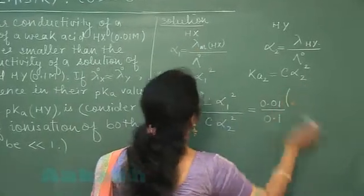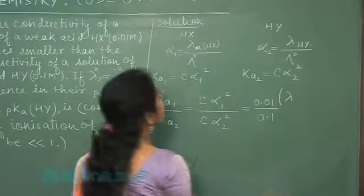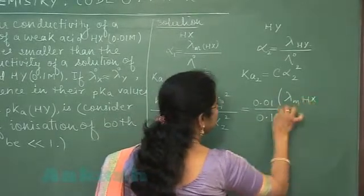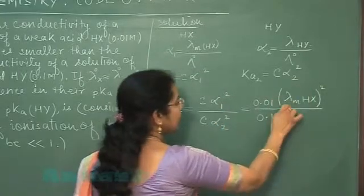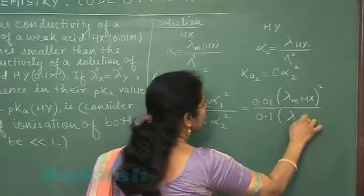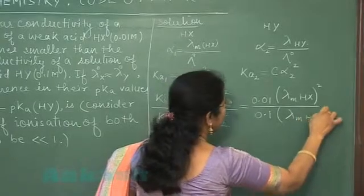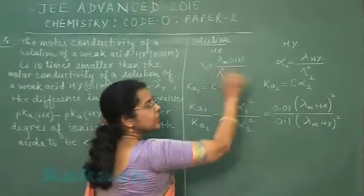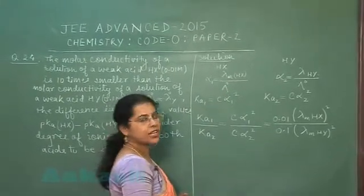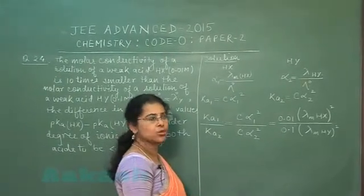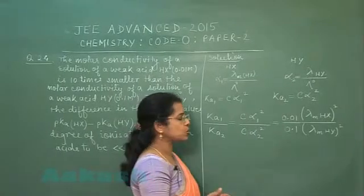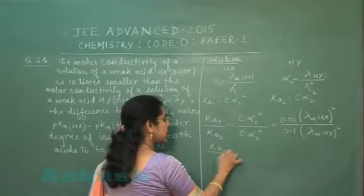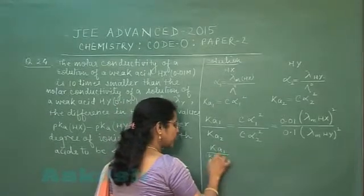This is molar conductivity of HX square. यहाँ लेख दिया हमने molar conductivity of HY square. Denominator में molar conductivity ले गई है. HX and HY की at infinite dilution जो दोनों के लिए approximately same आ जाएगे. अब इसे solve करते हुए Ka1 and Ka2 की value calculate कर लेगे.